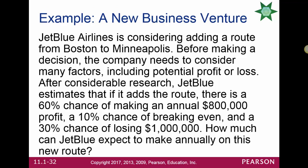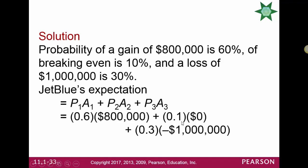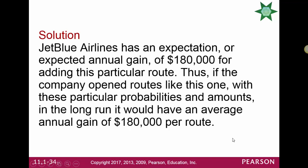JetBlue Airlines is considering adding a route from Boston to Minneapolis. After research, JetBlue estimates: a 60% chance of making an $800,000 annual profit, a 10% chance of breaking even, and a 30% chance of losing $1 million. To find expected annual earnings, we calculate: 0.6 × $800,000 + 0.1 × $0 − 0.3 × $1,000,000, which simplifies to an expectation of $180,000. In the long run, JetBlue would expect a gain of $180,000, though there remains a 30% chance of losing $1 million.